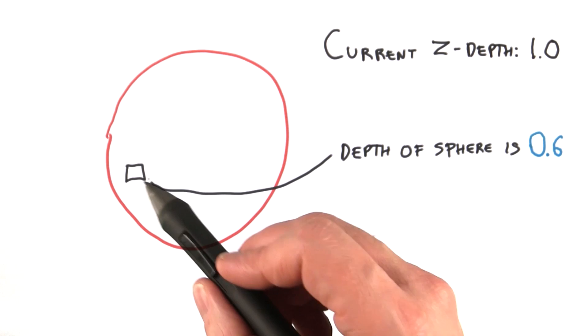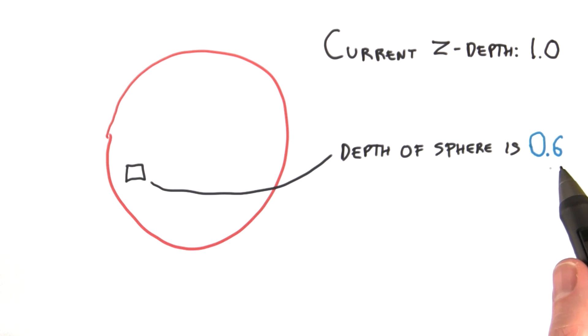So here, for example, I've rendered a sphere, and at this pixel, I found that the depth of the sphere is 0.6.